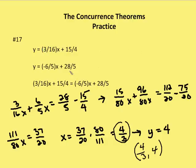Now we set our two equations equal: 3/16x + 15/4 = -6/5x + 28/5. Adding 6/5x to both sides and subtracting 15/4, we find a common denominator of 80 on the left and 20 on the right. We end up with 15/80x + 96/80x = 112/20 - 75/20, which gives 111/80x = 37/20. Multiplying both sides by 80/111 gives x = 4/3.